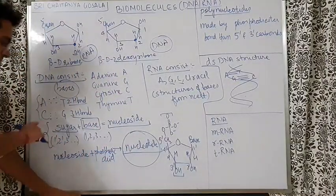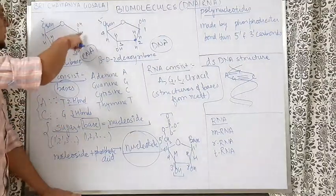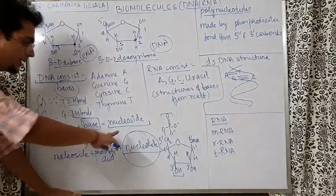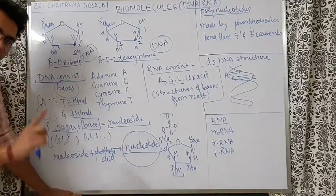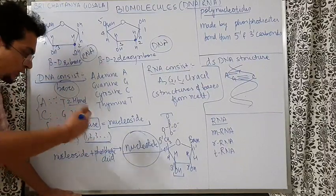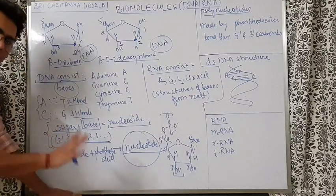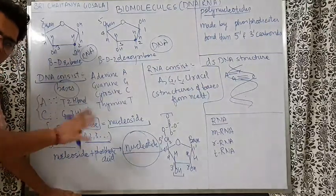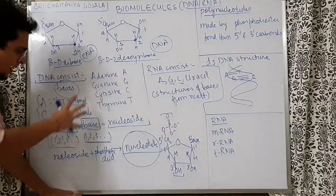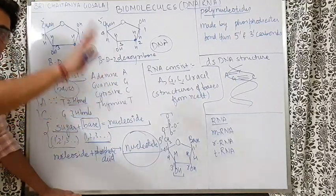In nucleoside, when doing numbering, the base is numbered as 1, 2, 3, 4, 5 and to differentiate, the sugar carbons are numbered as 1-prime, 2-prime, 3-prime, 4-prime, and so on. This prime notation is used to distinguish the carbon numbers of the base from the carbon numbers of the sugar.